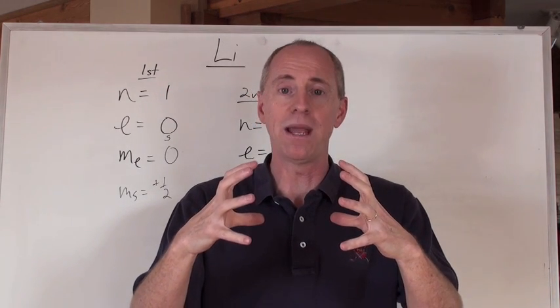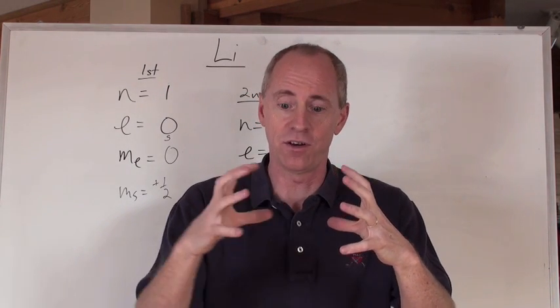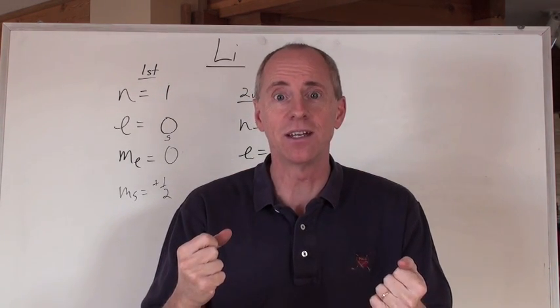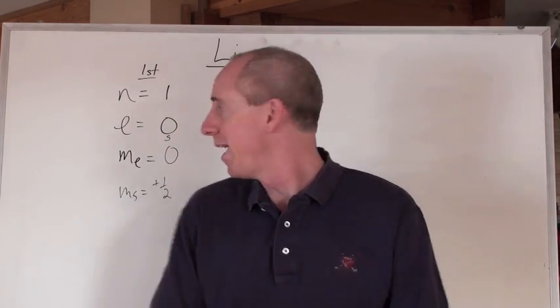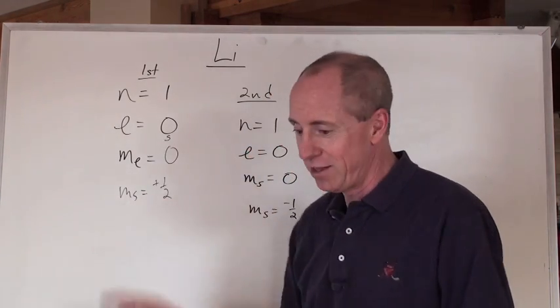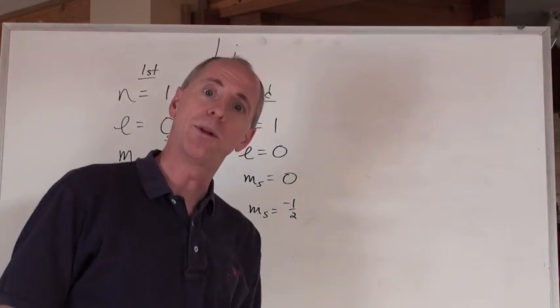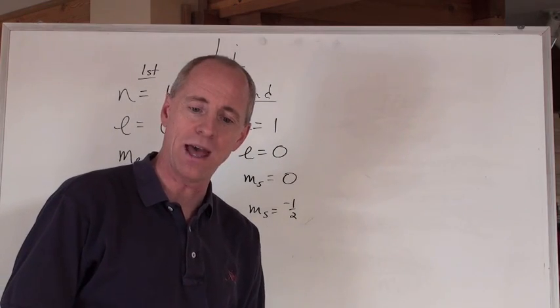Obviously then, the majority of space of an atom, since the nucleus is very, very small, is an empty space, isn't it, where the electrons can be. And they can be given these designations: one zero zero plus one-half, and one zero zero minus one-half.